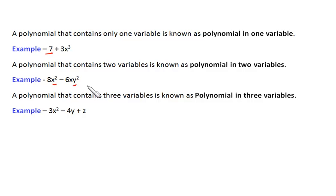In this case, x and y, two types of variables are there, so we call them polynomials in two variables. Similarly, in this case here, x, y, and z, three variables.